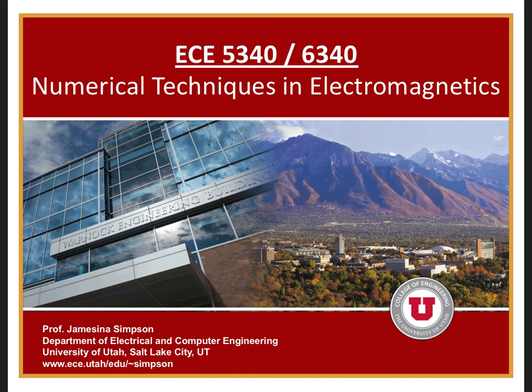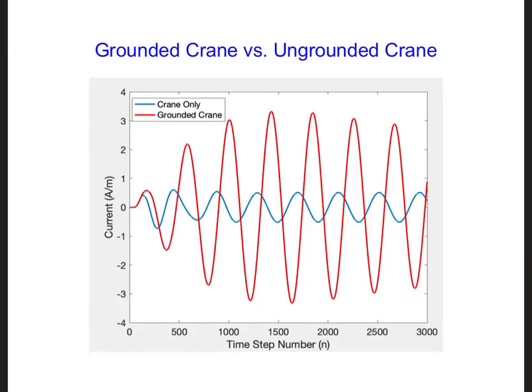Today we're going to finish the design challenge for the crane electromagnetic interference problem. Last time we figured out how to measure the current at the midpoint of the crane. We also figured out that grounding the crane increases the amplitude of the current at the midpoint of the crane. So now we need to come up with another idea for reducing the amount of current on the crane.